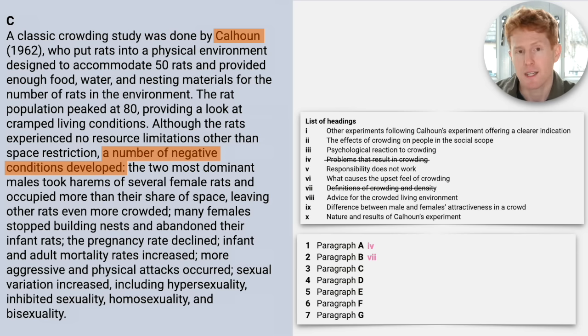Calhoun's results have led to other research on crowding's effect on human beings, and these research findings have suggested that high density is not the single cause of negative effects on humans. When crowding is defined only in terms of spatial density, the amount of space per person, the effects of crowding are variable. However, if crowding is defined in terms of social density, or the number of people who must interact, then crowding better predicts negative psychological and physical effects.